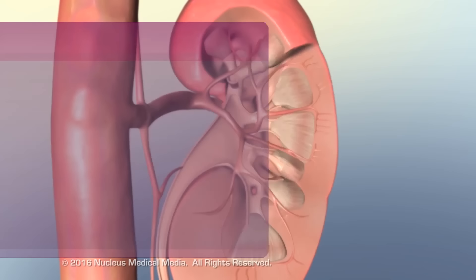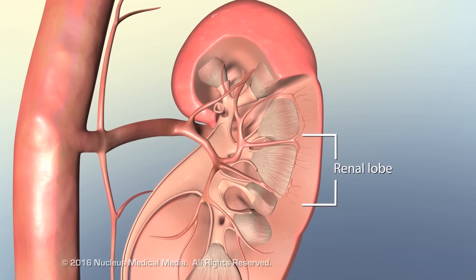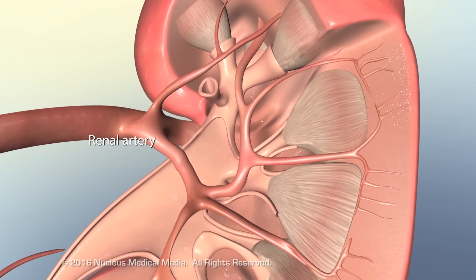The medullary pyramid and outer cortex compose the renal lobe, the structural unit of the kidney. Branches of the renal artery supply each renal lobe.